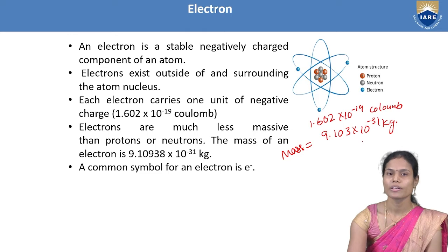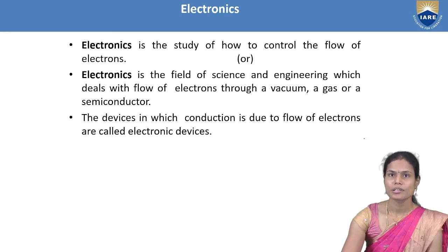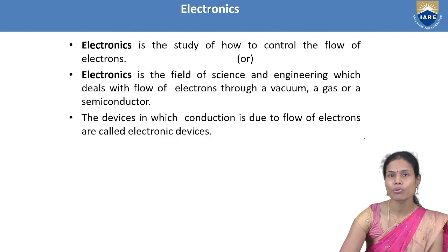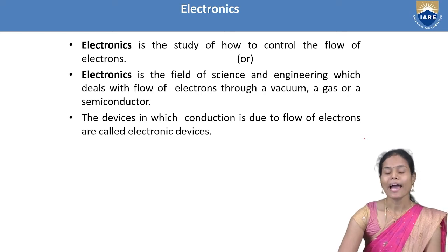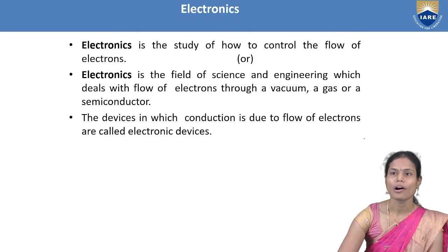Electronics is the study of the flow of electrons — how to control the flow of electrons indicates electronics. We can also define electronics as the field of science and engineering which deals with the flow of electrons through a vacuum, a gas, or a semiconductor material.